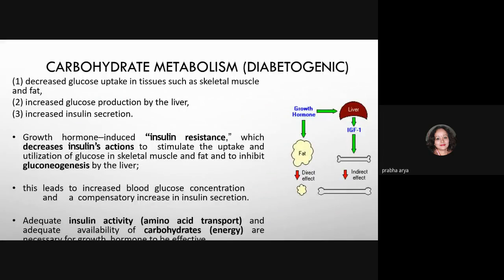Regarding carbohydrate metabolism under growth hormone: GH decreases glucose uptake in tissues such as skeletal muscle and fat, increases glucose production by the liver, and increases insulin secretion. This creates a form of insulin resistance — insulin concentration is increased but does not help glucose uptake by cells. The purpose of increased insulin secretion is to increase amino acid transport into cells, as insulin alongside growth hormone enhances amino acid absorption for protein synthesis, thereby sparing carbohydrate for energy.